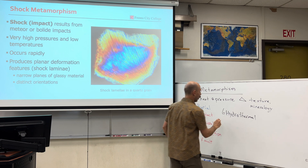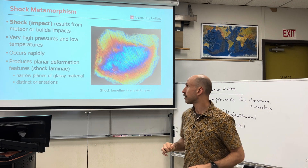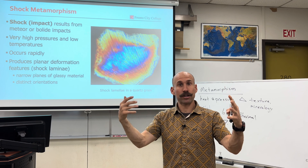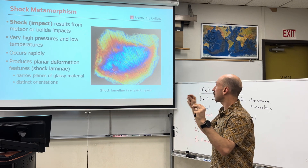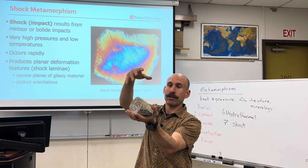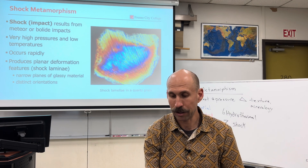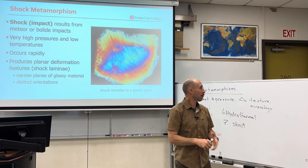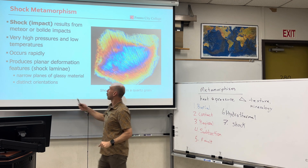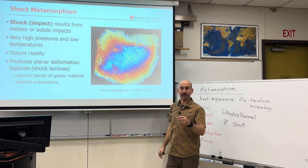Last but not least: shock metamorphism. When a large particle from outer space — a meteor or bolide — impacts the surface of the Earth, there is a tremendous amount of pressure. That event can change the type of rocks subject to the collision. The rock comes in, smashes, and debris goes everywhere. The surrounding rocks and ejected debris are impacted by the collision, causing metamorphism that changes the texture and composition of the protolith. This is called shock laminae, and we can see it under thin section.